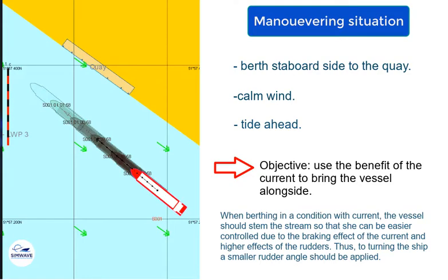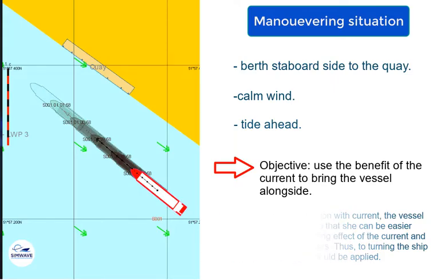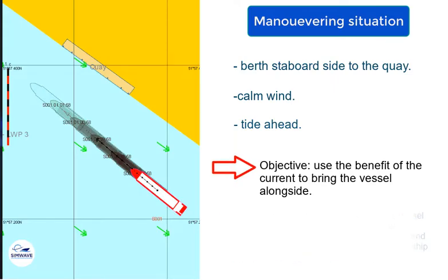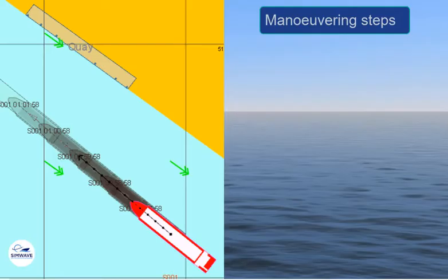Thus, to turn the ship, a smaller rudder angle should be applied. This maneuvering can be divided into 4 basic steps.